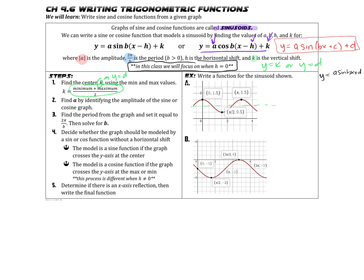You also may be able to identify the center directly from the graph. On this graph, in example A, I can tell that the center is the dotted line at Y equals 1. So the first thing we do is identify our center — D or K equals 1. Then we identify the amplitude: once we have our center line, we can identify how high above or how low below the center line we go. In this case, it's going up and down one half, so our amplitude is one half.